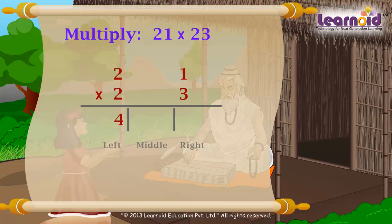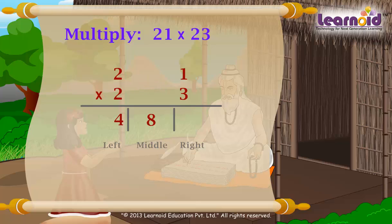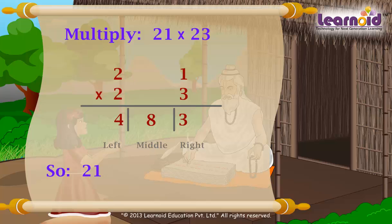Now for the middle term, multiply crosswise and add: 2 into 3 plus 2 into 1, so 6 plus 2 equals 8. Now for the rightmost term, multiply vertically: 1 into 3 equals 3. So the answer is 21 into 23 equals 483.